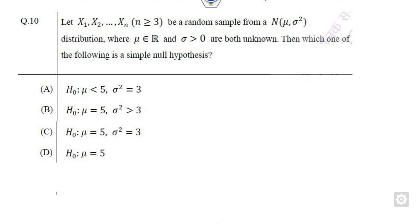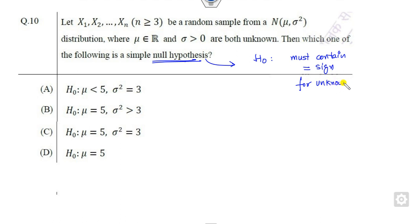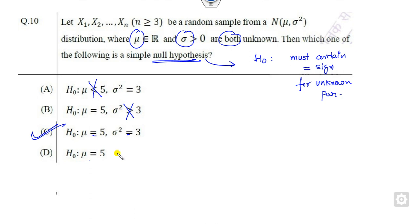Look at the last question. You have to define the null hypothesis. The null hypothesis h0 must contain an equality sign for the unknown parameters. In this question, how many unknown parameters are there? Both mu and sigma are unknown. So you have to look for h0 containing equality for both. Options without equality are cancelled. Options where only mu appears — meaning sigma could be greater than, equal to, or less than — will also be cancelled. Only option C, where both mu and sigma have equality signs, is the correct answer.